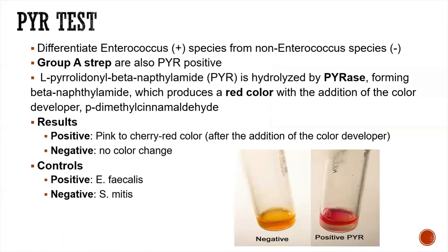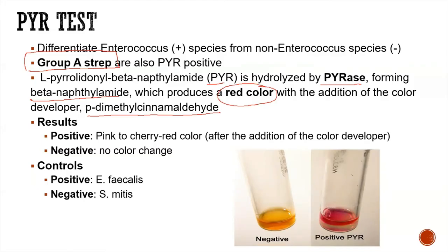Another test to differentiate Group A from Group B is the PYR test. Group A strep is PYR-positive. The principle: PYR is hydrolyzed by the enzyme pyrrase, forming beta-naphthylamide, which produces a red color with the color developer para-dimethylaminocinnamaldehyde. The positive result, as seen in the picture, is a pink to cherry-red color.